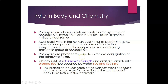Porphyrins are photoactive due to extensive conjugation of the tetrapyrrole ring. They can absorb light at approximately 400 nanometer wavelength, which is in the purple range, and will emit a characteristic orange-red fluorescence detectable between 600 and 650 nanometers. This property produces some of the manifestations of the diseases and provides a means for detection of porphyrin compounds in body fluids tested in the laboratory.